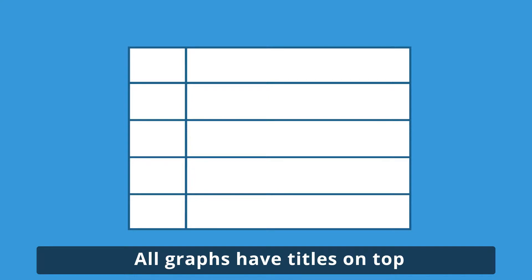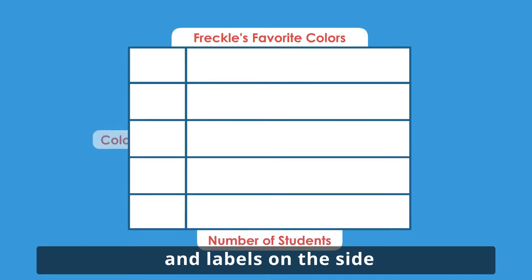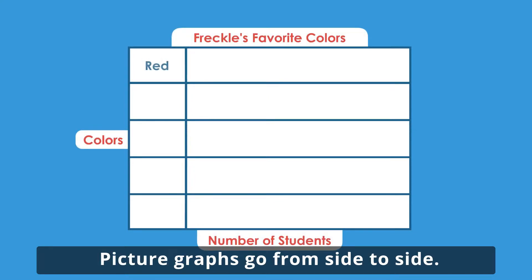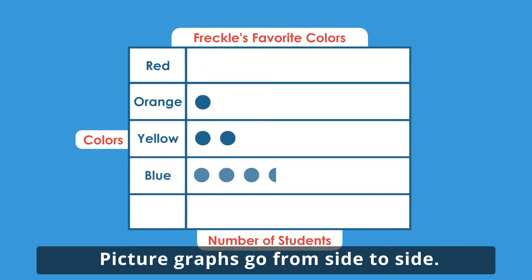All graphs have titles on top and labels on the side. Picture graphs go from side to side.